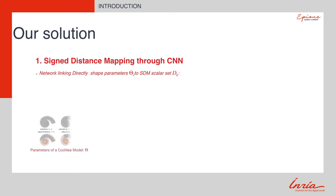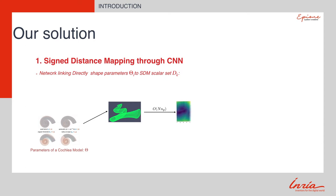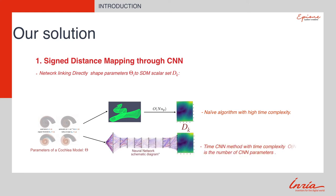Here, theta is the shape parameter set, where i indicates the number of parameters used to represent the shape model, and d is the corresponding signed distance map of the shape model. According to the neural network, computing time is just linear. The proposed method can compute the distance on GPU efficiently. However, for traditional methods, we usually need to introduce an intermediate step to generate a mesh grid for rasterization.